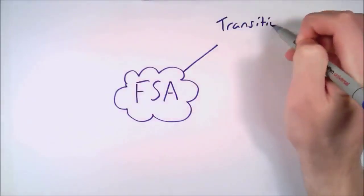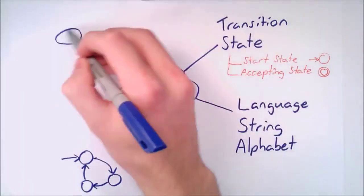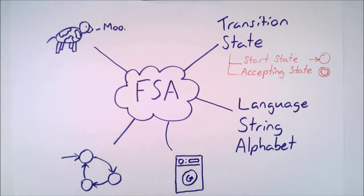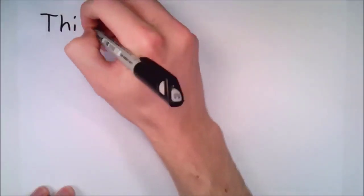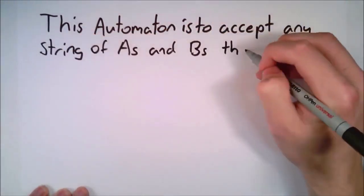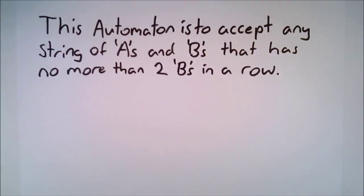By now we should have an OK understanding of finite state automaton, what they're used for, and how to read them. Let's try to create our own. First up, we need to define what we want this automaton to achieve. Let's go with this: This automaton is to accept any string of As and Bs that has no more than two Bs in a row. OK, we have our definition, now let's break it up to understand what it means.